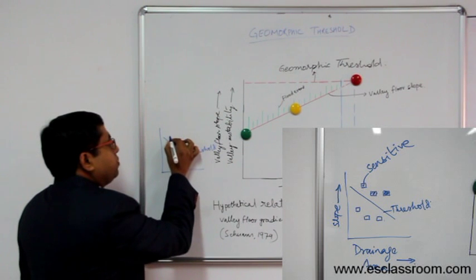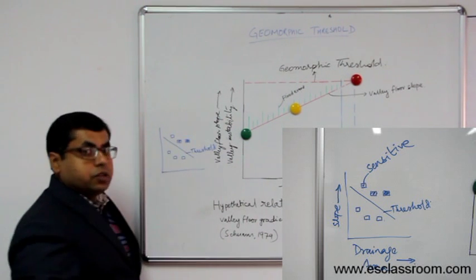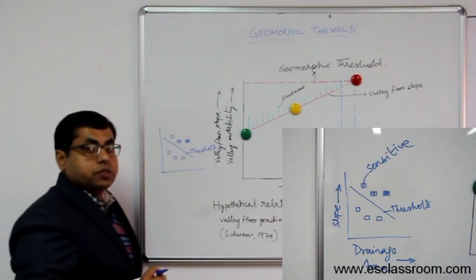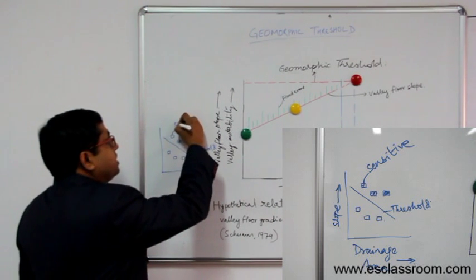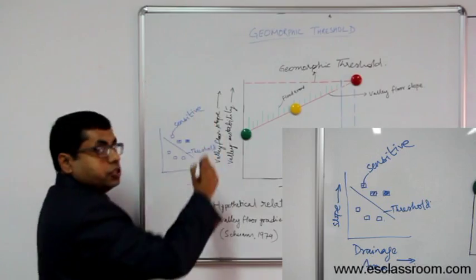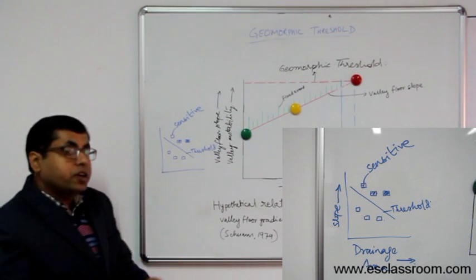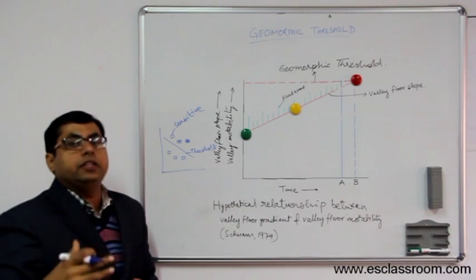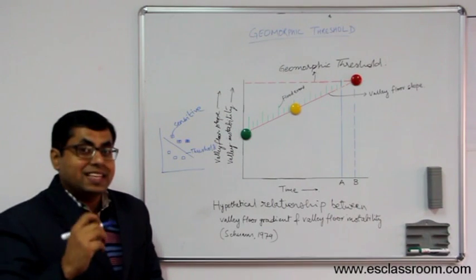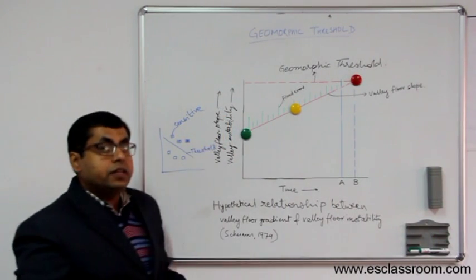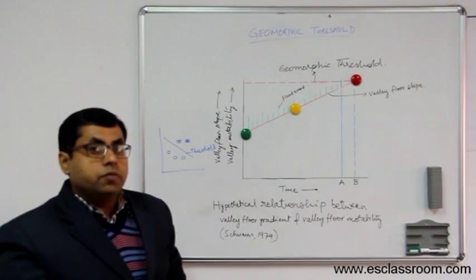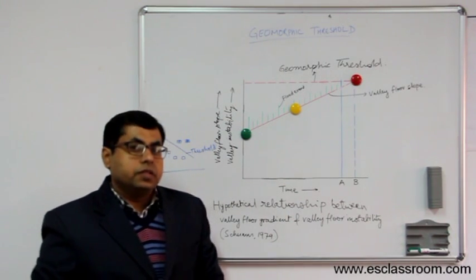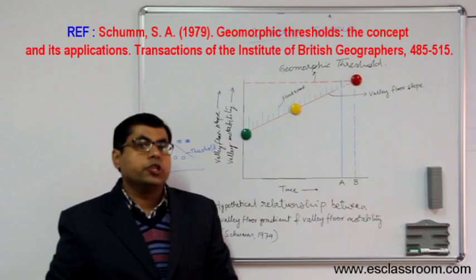Now, such locations or such systems, they are sensitive to any change. These are very important for us. Why these are very important? Because these have tendency to record any change. This landscape sensitivity is closely associated with the concept of threshold. So, you can go through the paper by Schumm and develop this concept because this is used a lot in the field of geomorphology.